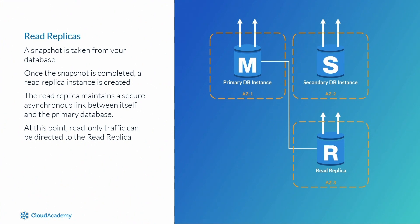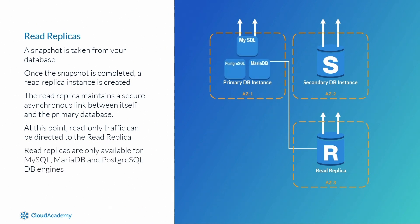At this point, read-only traffic can be directed to the read replica to serve queries, perhaps from business intelligence tools. By implementing read replicas, it helps to offload this traffic from the primary instance, therefore helping with the overall performance.